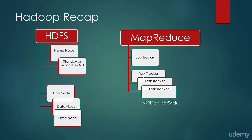MapReduce 1 has two components: Job Tracker and Task Tracker. Jobs are submitted to the Job Tracker, and tasks are forwarded to Task Trackers. A task can be either a map task or a reduce task. Once map tasks complete their work, reducers work on the output generated by the map tasks. After reducers complete their work, output can be returned to HDFS or a normal file system.